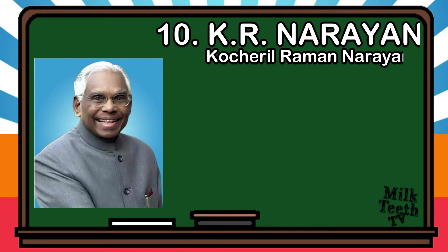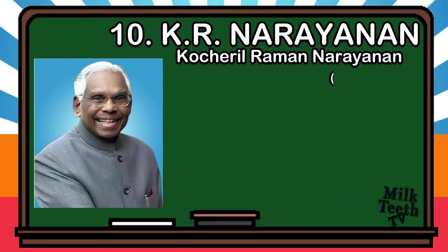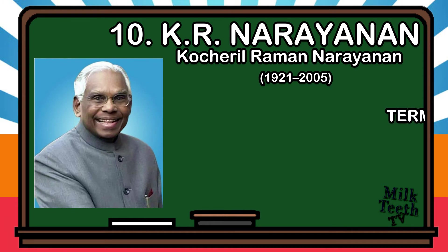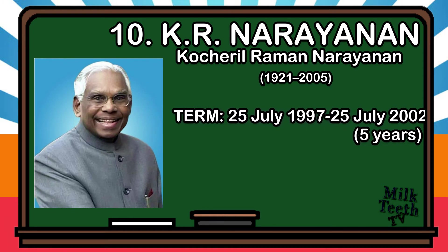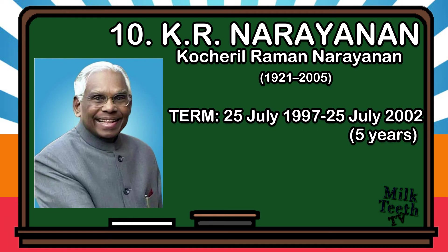Tenth President of India: K.R. Narayanan — Kochiril Raman Narayanan. Born in 1921, he became the President of India on 25th July 1997 and served till 25th July 2002, for a complete period of 5 years.